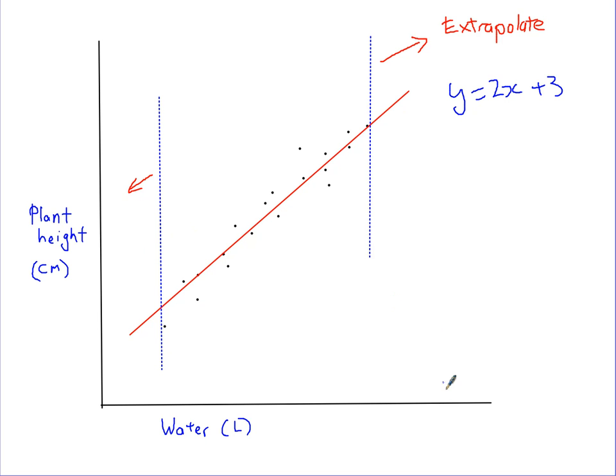We might go, okay, we've put on, say, 100 litres. Let's find out what that is. So you come up here, you go, y equals 2 times 100, because 100 is the x value, plus 3. Therefore, y equals 203 centimetres. So our plant grows to 203 centimetres.